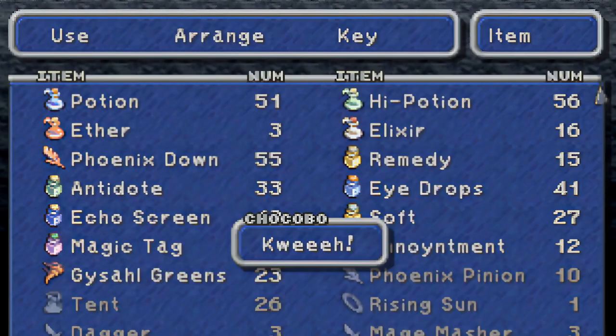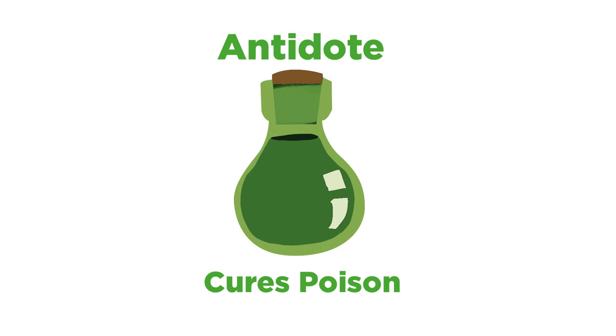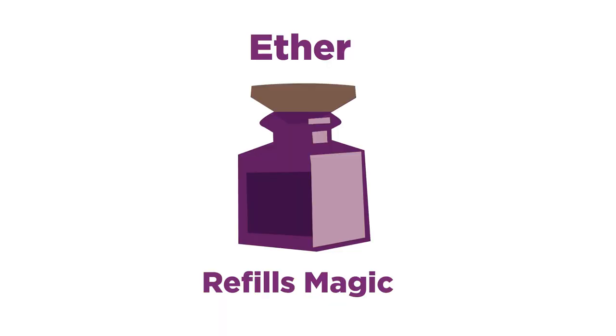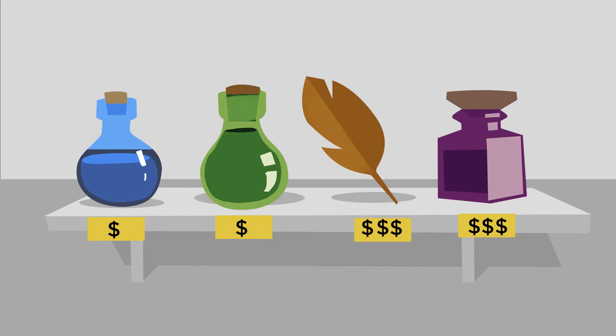This RPG series has a collection of staple consumable items. Potions give you health. Antidotes cure poison. If a party member dies, you bring them back to life with a phoenix down. And then an ether refills your magic energy. So at a glance, we could say that these are all pretty similar. They're sort of like different items on a medicine shelf that you'd see at a pharmacy. But if you've played any Final Fantasy games, you know that there's actually one other crucial detail.